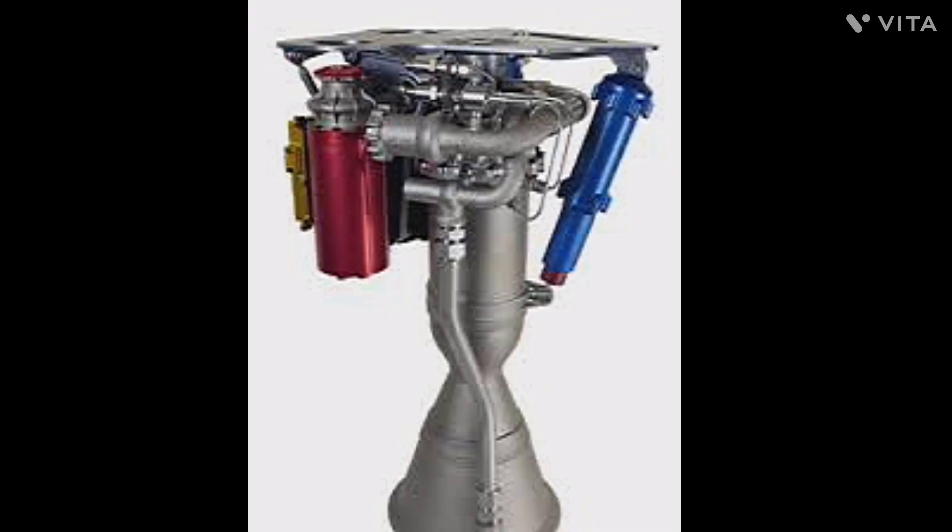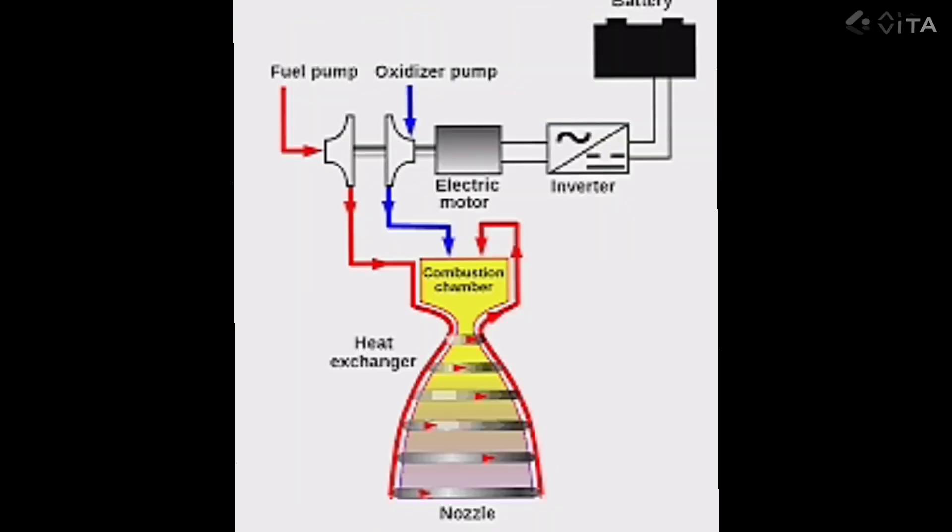Still looks like your average rocket engine, doesn't it? Well, it is. It works just like any other liquid propellant rocket engine by pumping fuel and oxidizer into combustion chamber to produce hot high pressure exhaust gases. These exhaust gases get accelerated through the nozzle and produce thrust lifting the rocket up.